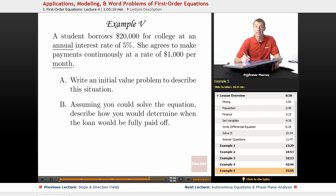Our last example is a financial example. We have a student borrowing $20,000 for college, so she initially collects $20,000 and uses that to pay her tuition, and then she agrees to pay off an annual interest rate of 5%. And so she's going to make her payments continuously at a rate of $1,000 per month.